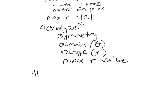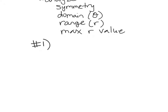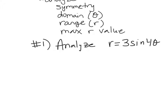Number one: analyze R equals 3 sine of 4 theta. Sometimes they'll put parentheses around 4 theta, but it's sine of 4 theta. First thing we're going to do is draw a nice picture of it. Go to your calculator and make sure you are in polar mode. We're going to do these in degrees — it might be a little bit better. Let's switch together. Go to mode and switch over to degree and polar.